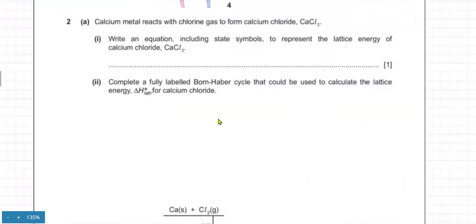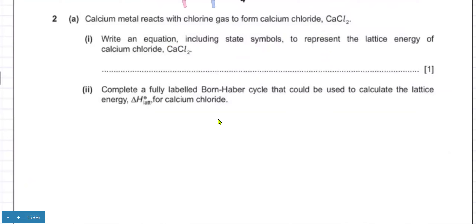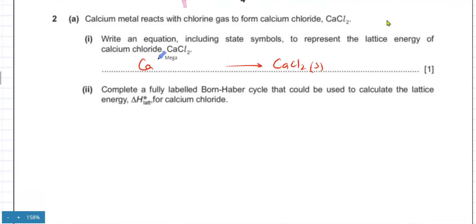The next question asks you to write the equation including state symbols to represent the lattice energy of calcium chloride. By definition, lattice energy is the energy released when one mole of ionic solid — in this case calcium chloride — is formed from its gaseous ions: Ca²⁺ ions in the gaseous state and two Cl⁻ ions also in the gaseous state.